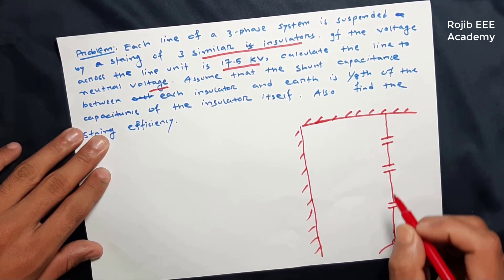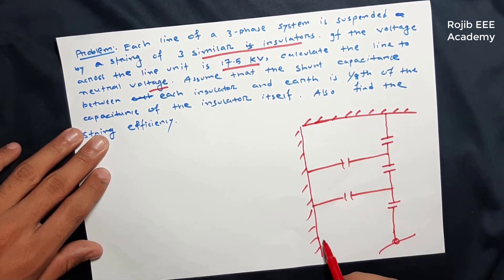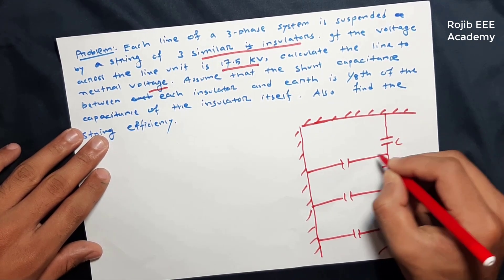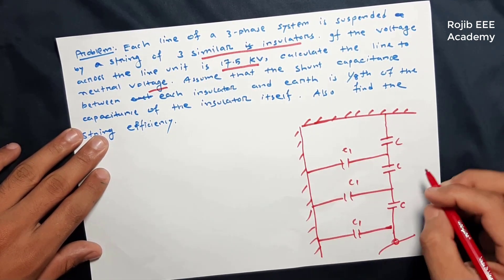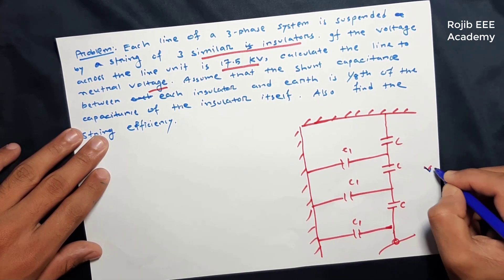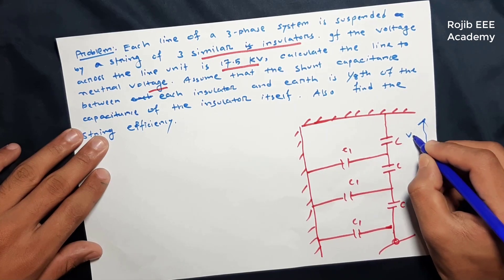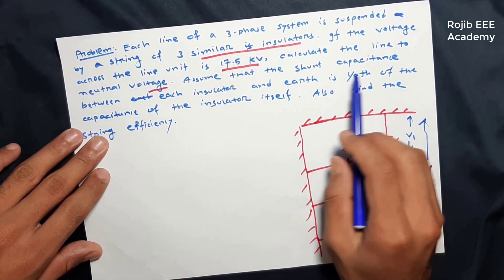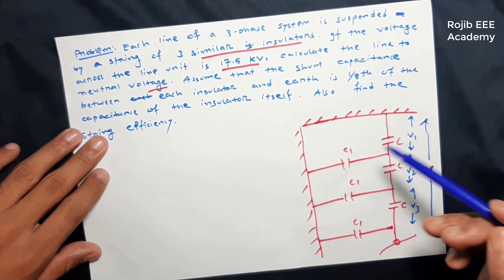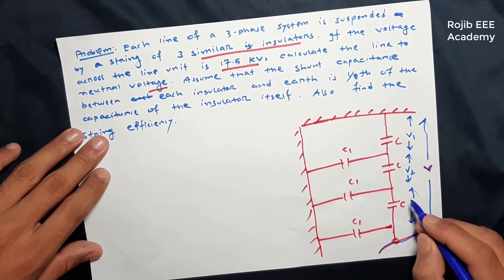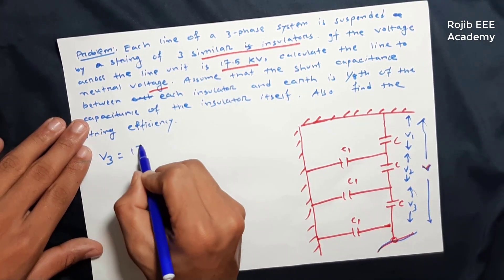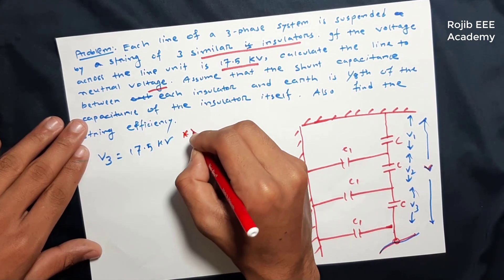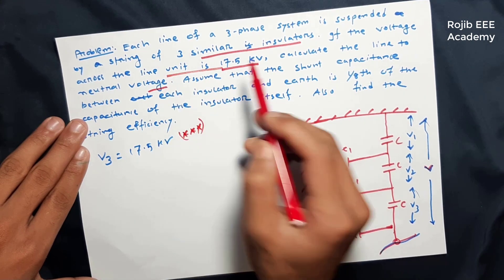This is the conductor, this is the shunt capacitance, this is the self-capacitance C, and C1. The total voltage is V, with V1, V2, and V3 representing voltages across each insulator unit. This is the voltage across the line unit — specifically the voltage V3.